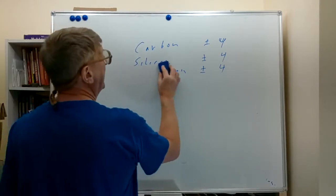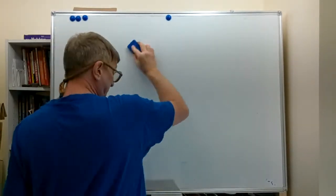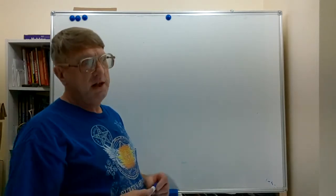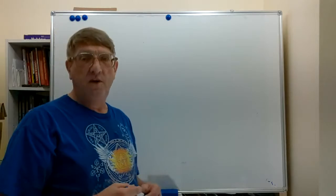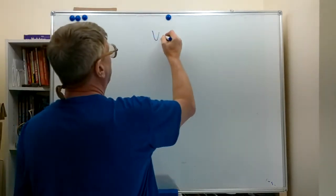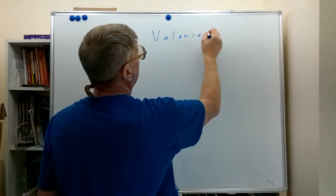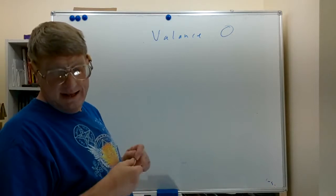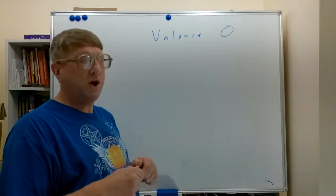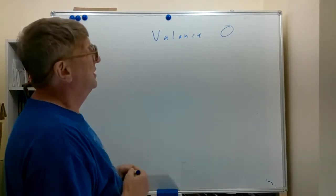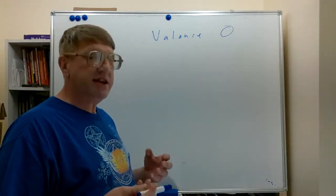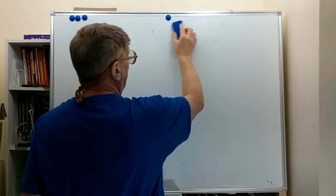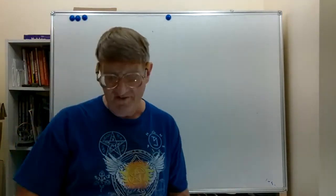The inert gases are all over on the far right side of the periodic table. They have a full valence with eight electrons in it, so we call that a valence of zero — it means there are no easily released electrons. Helium, neon, argon — all these are what we call inert gases, and they do not form compounds. Compounds are formed by the sharing of valence electrons, creating what we call covalent bonds. The inert gases with a full valence of eight electrons have no extras, which is why we call it a valence of zero.